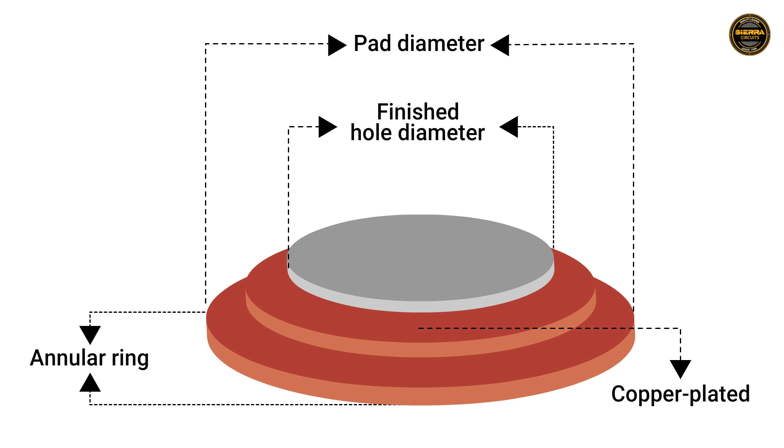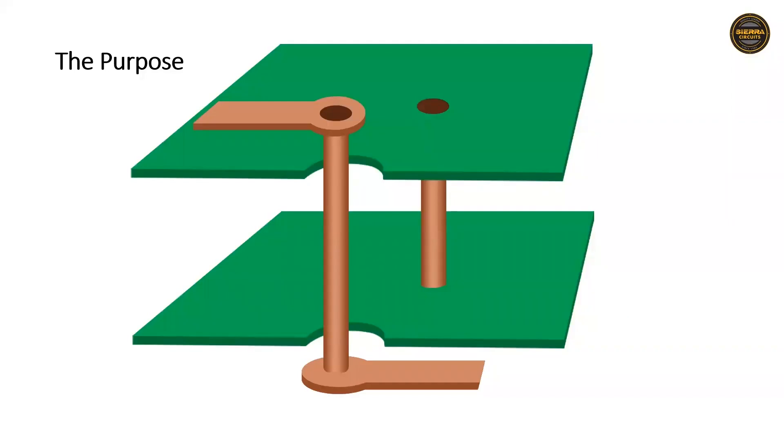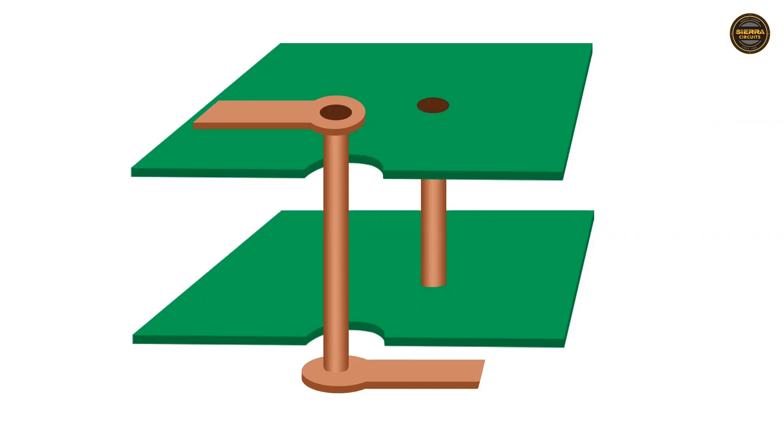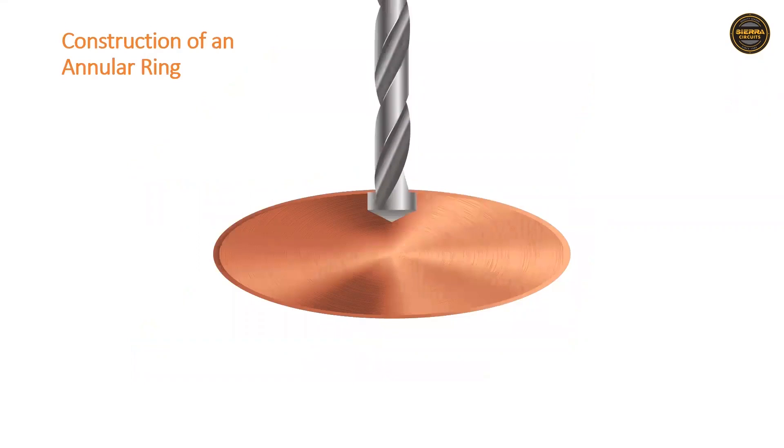An annular ring is a copper pad area surrounding a finished hole. It serves as a connection between a via to a copper trace. In multi-layer PCBs, the inner layers are connected to the via through the annular rings. Hence, there should be enough copper around the via to form a solid connection with a trace.